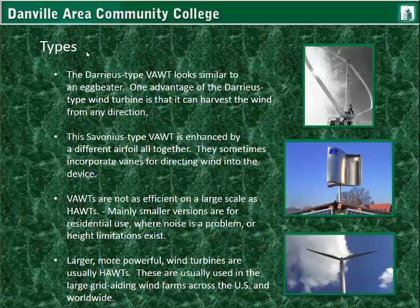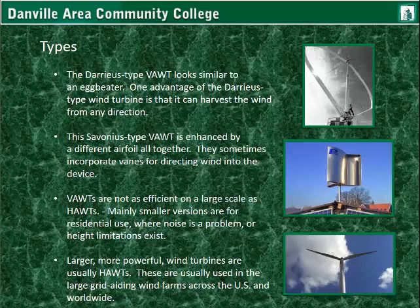There are two main orientations for wind turbines: vertical axis and horizontal axis, with specific subtypes for each. The Darrieus-type vertical axis wind turbine looks like an eggbeater. One advantage is that it can harvest wind from any direction — since it rotates about a vertical axis, it doesn't matter whether the wind comes from north, south, east, northeast, or any direction; it will still rotate.